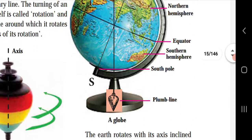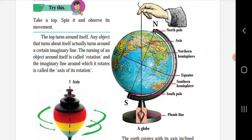You have to take a globe and hold a plumb line close to it as shown in the picture. You can see the North Pole, axis, Northern Hemisphere, equator, Southern Hemisphere, and South Pole — these are the parts of our globe. The axis joins the North and South Pole. Above the equator is the Northern Hemisphere, and below the equator is the Southern Hemisphere.